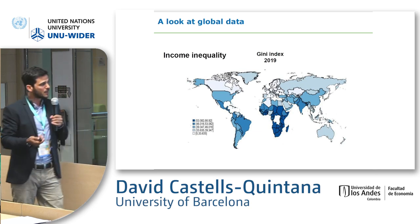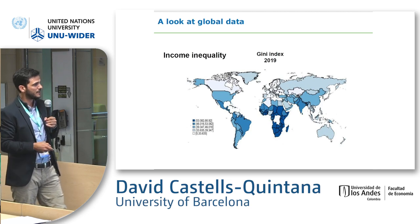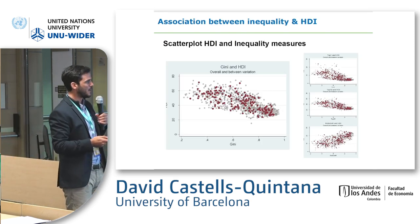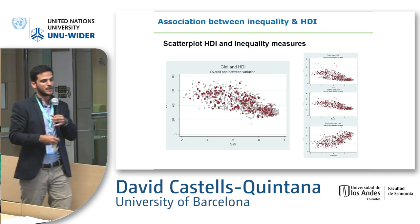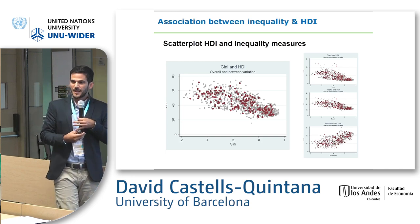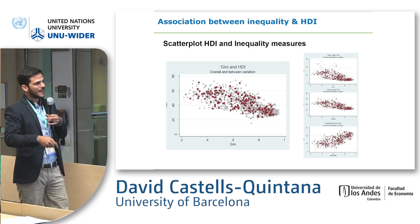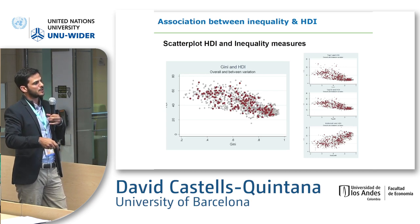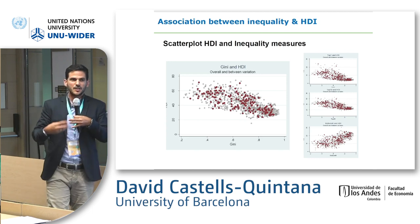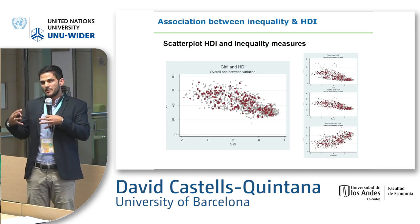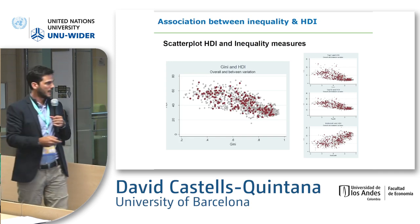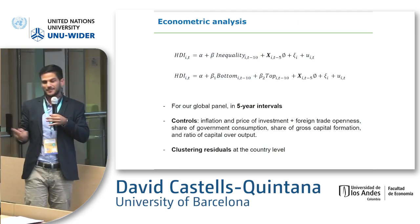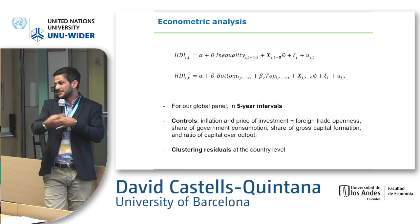Looking at the association between inequality and HDI — if we do simple scatter plots or OLS long-run associations, we find a negative association. Whether we look at the Gini, the top 1%, or the top 10%, this negative relationship holds — the bottom 40 goes the other way around. Looking at the global sample of countries over time, you find this negative association between inequality and HDI. We explore this in more depth using regression analysis — that's why I studied and teach econometrics.